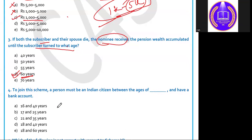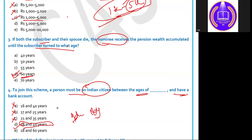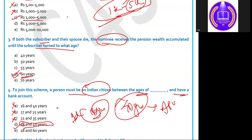Question 4: to join this scheme, a person must be an Indian citizen between what age? The options are 16–40, 17–25, 21–35, or 18–40. The correct answer is 18 to 40 years. A person must have reached adulthood — 18 years — and can subscribe up to 40 years of age. The nominee or subscriber will receive benefits from 60 years of age onward.